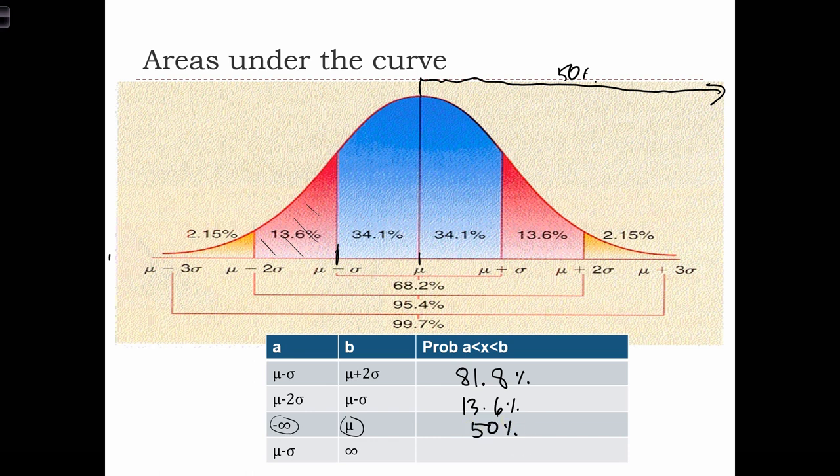But what about μ minus σ to infinity? So in that case, first we see that we've got 34.1% in this range between μ minus σ and μ, and then we're going to add the 50% of the area that's to the right of μ and less than infinity, which is all of that area. So we have to add 34.1 plus 50, 84.1%.